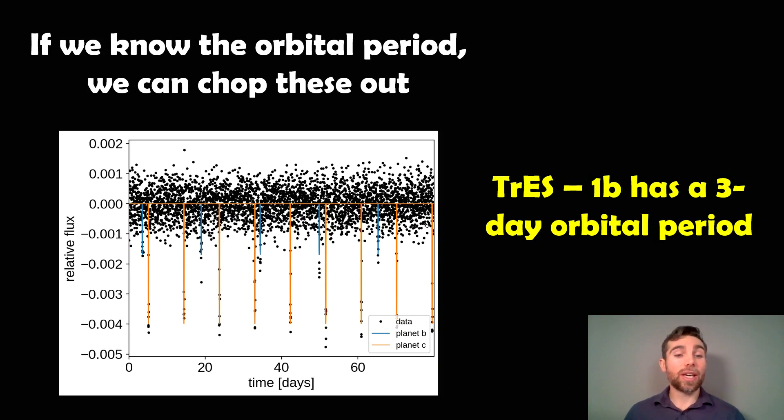The best thing you want to do is keep monitoring this star. This isn't TRES 1b, it's a different star with two planets orbiting. You've got an orange vertical line and a blue vertical line, and these are the transits of two individual planets. You can work out from that what their orbital period is, because it's just the time between each transit.